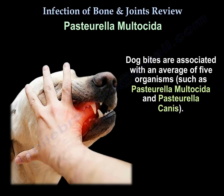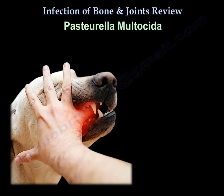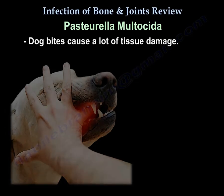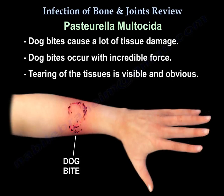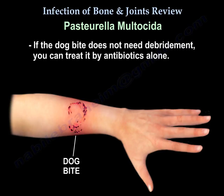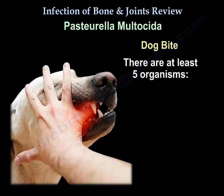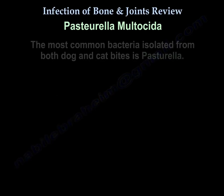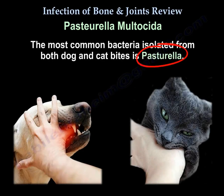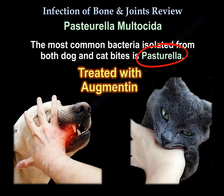Dog bites involve an average of five organisms, including Pasteurella multocida and Pasteurella canis. Dog bites cause a lot of tissue damage — not like the small puncture wound of a cat — and injuries can be occult due to incredible force with visible tearing. If the dog bite doesn't need surgical treatment, antibiotics alone can be used. Pasteurella multocida stands out, and the treatment is augmentin.